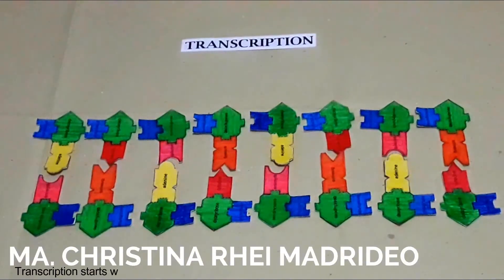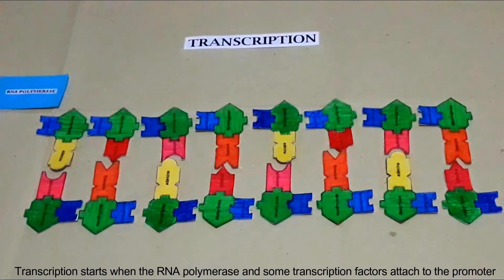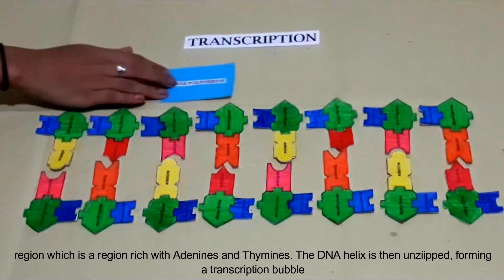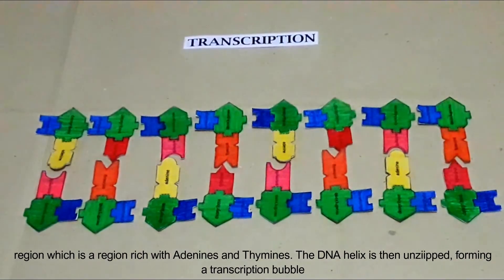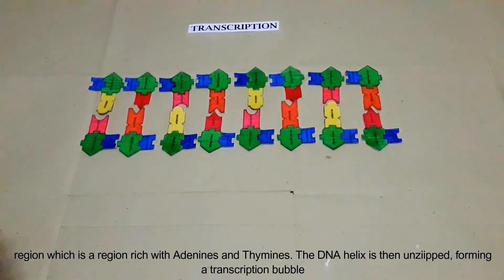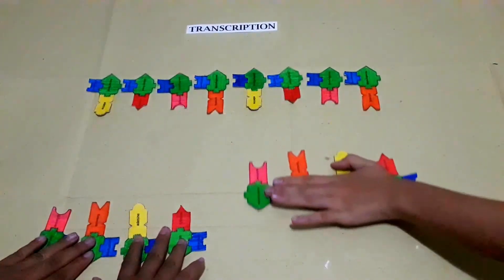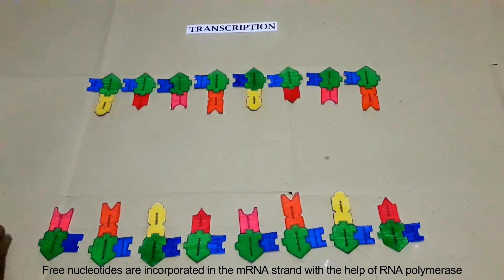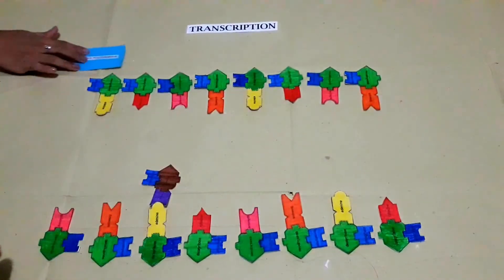Step one: Transcription starts when the RNA polymerase and some transcription factors attach to the promoter region, which is a region rich with adenines and thymines. The DNA helix is then unzipped, forming the transcription bubble. Step two: Free nucleotides are incorporated into the mRNA strand with the help of RNA polymerase.